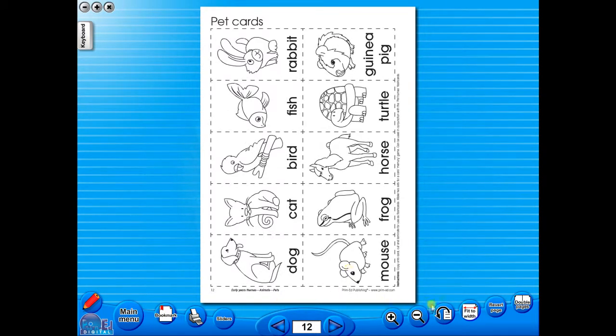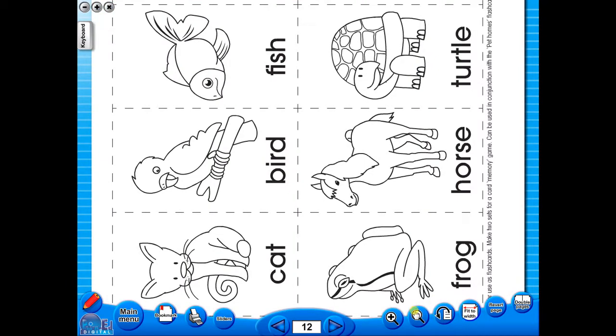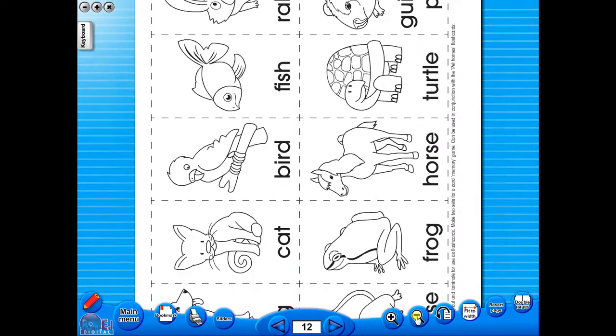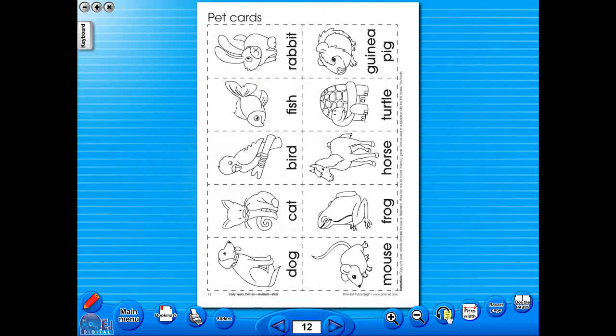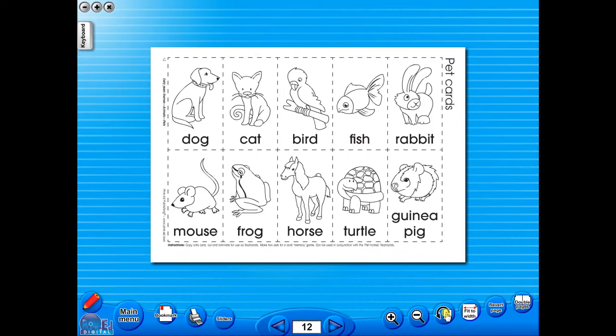To alter the size of the page on the screen or the interactive whiteboard, use the icon fit to width, like so, or by using the zoom in or zoom out icons here. One can also use the rotate icon to display the worksheet in a horizontal position.